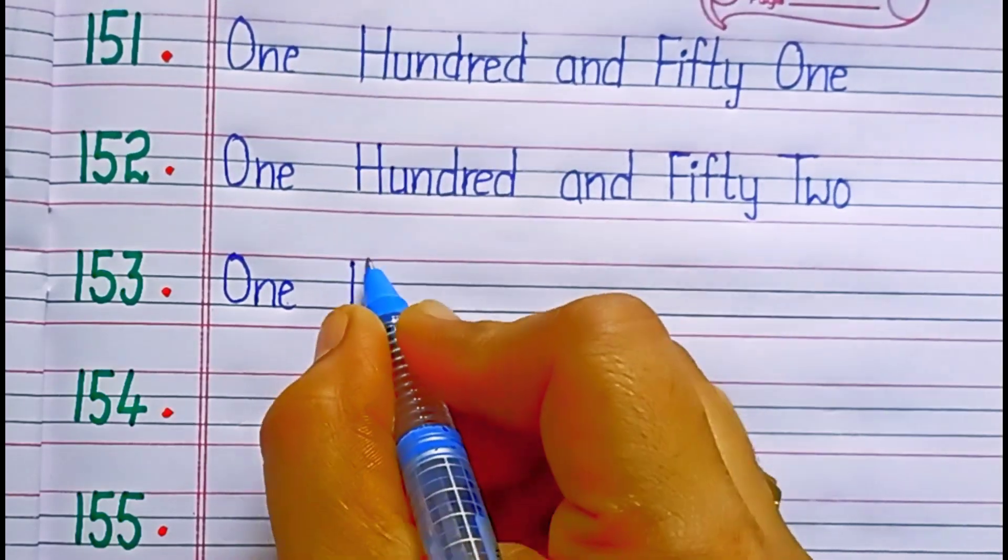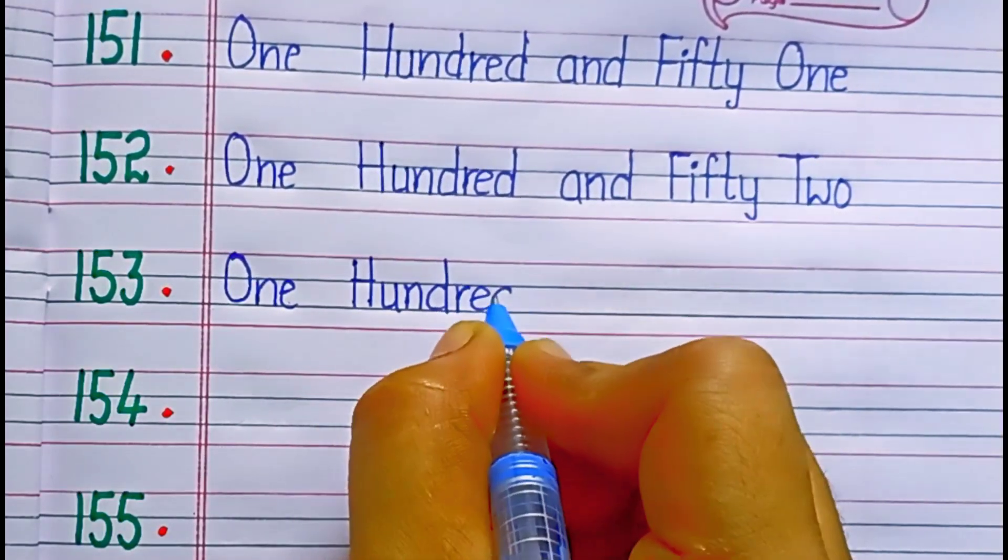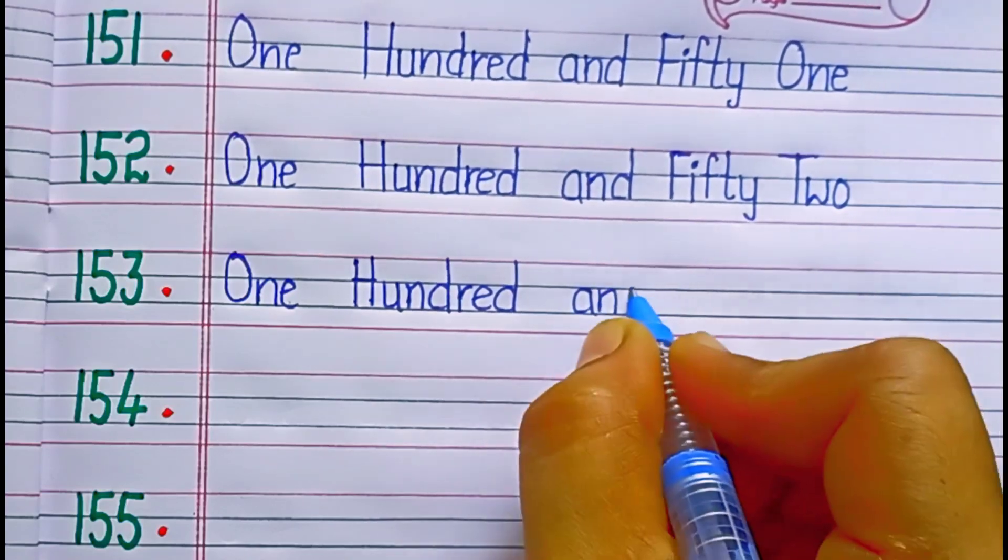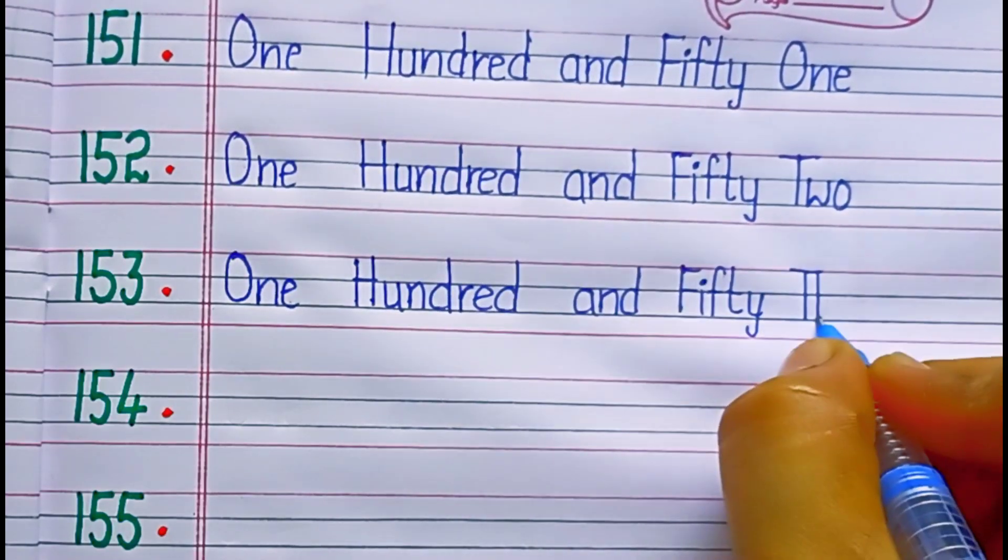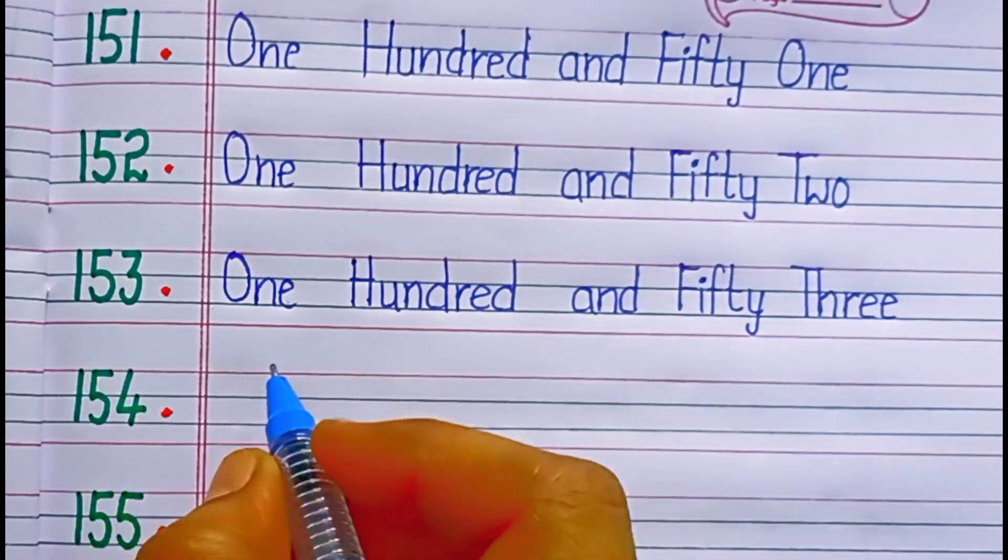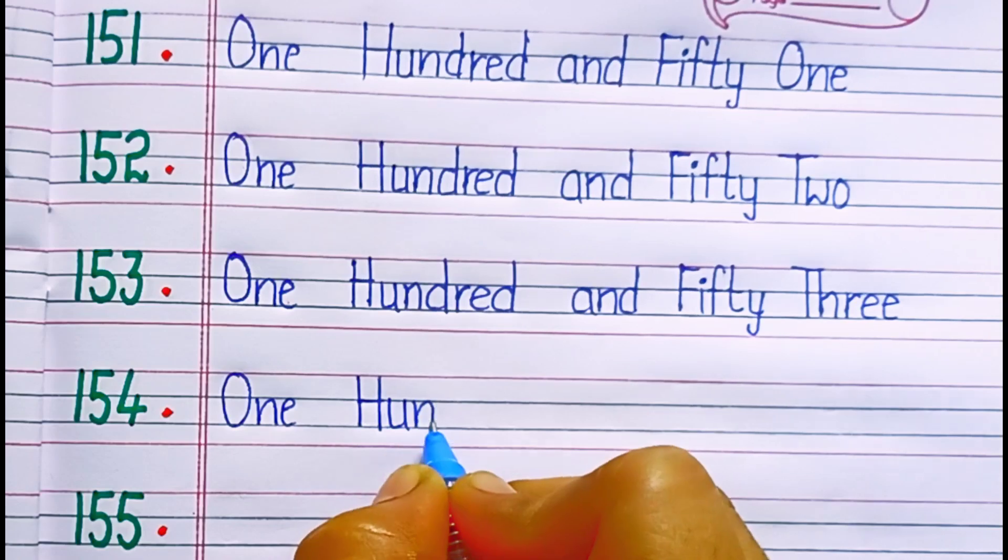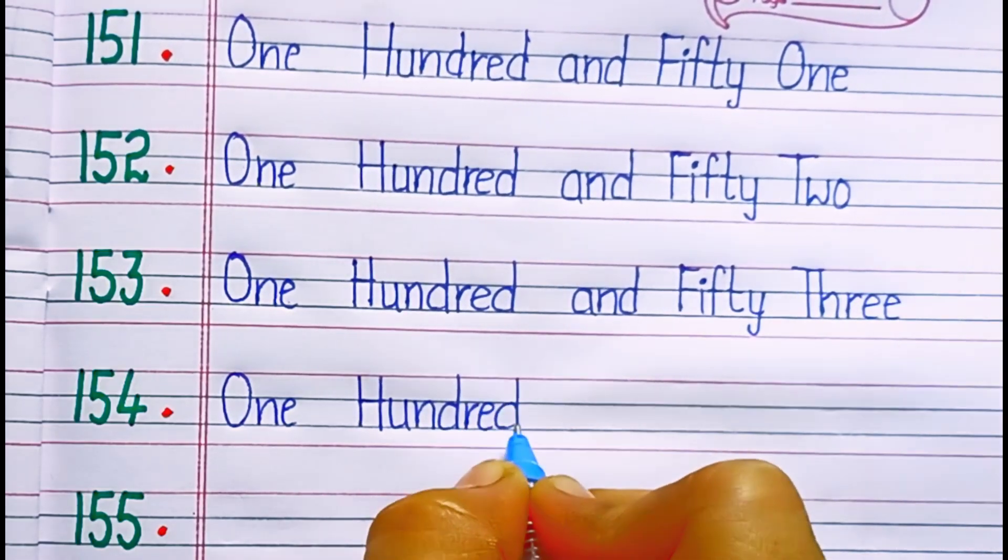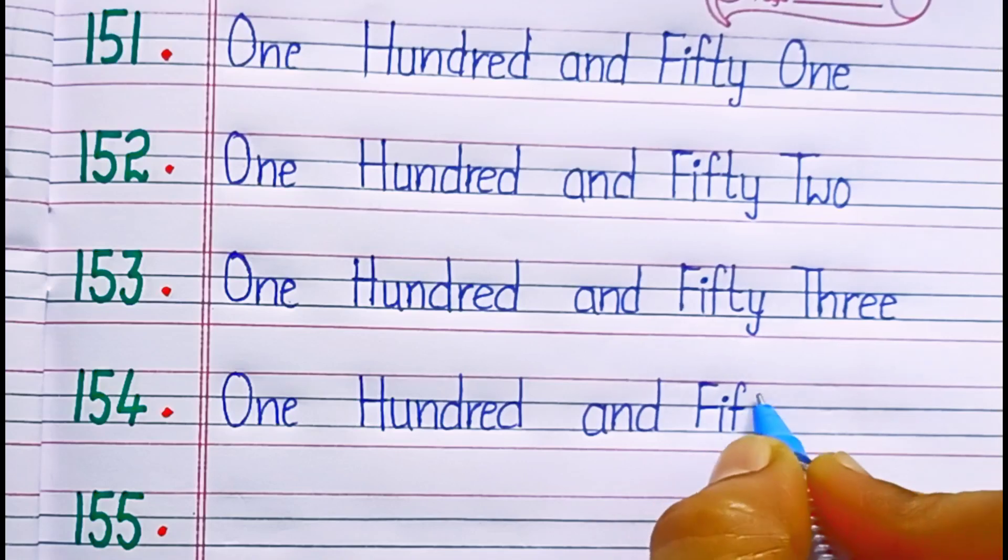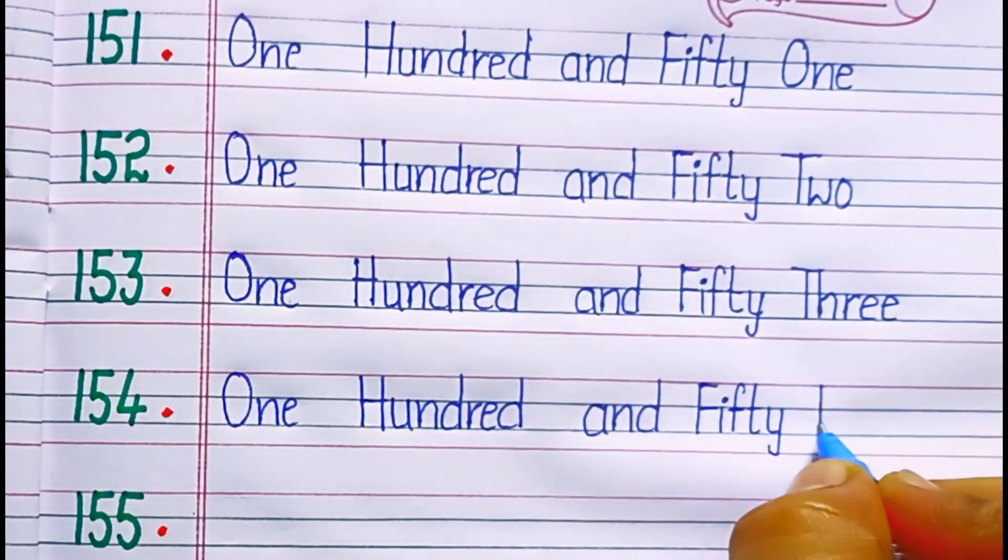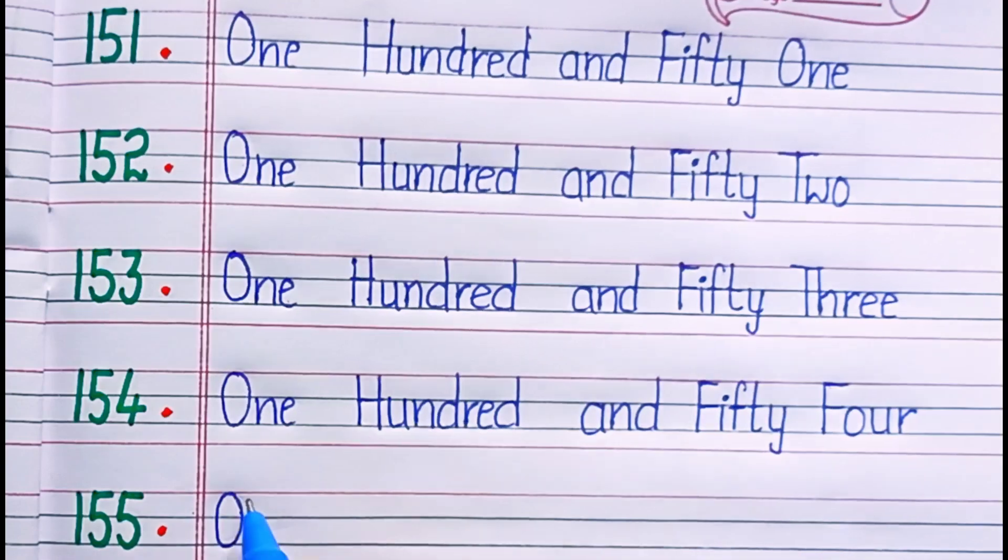F-I-F-T-Y, 50. T-H-R-E-E, 3, 53. One hundred and fifty-four. One hundred and fifty-four. F-I-F-T-Y, 50. F-O-U-R, 4, 54. One hundred and fifty-five. One hundred and fifty-five.